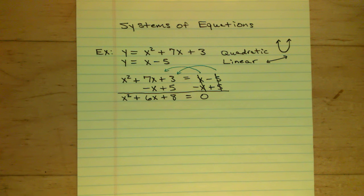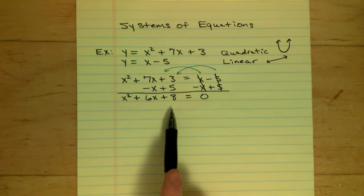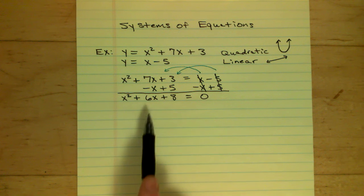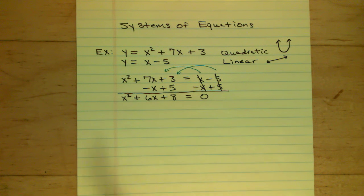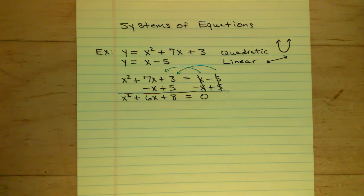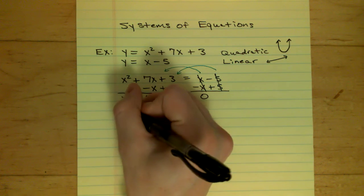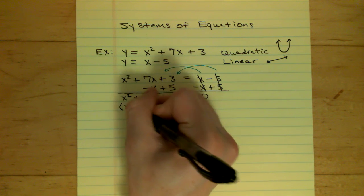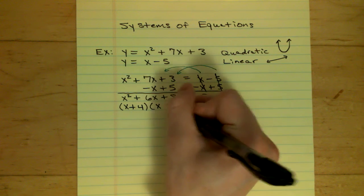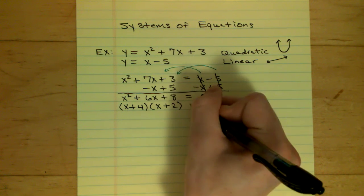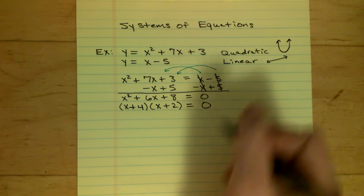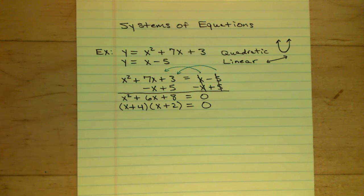So now I'm in a good place to factor the left side. To factor something like this, I need to find two numbers that multiply to 8 but also add up to 6. 4 times 2 equals 8, and 4 plus 2 equals 6. So I can factor this as (x + 4)(x + 2). The right side is still equal to 0.